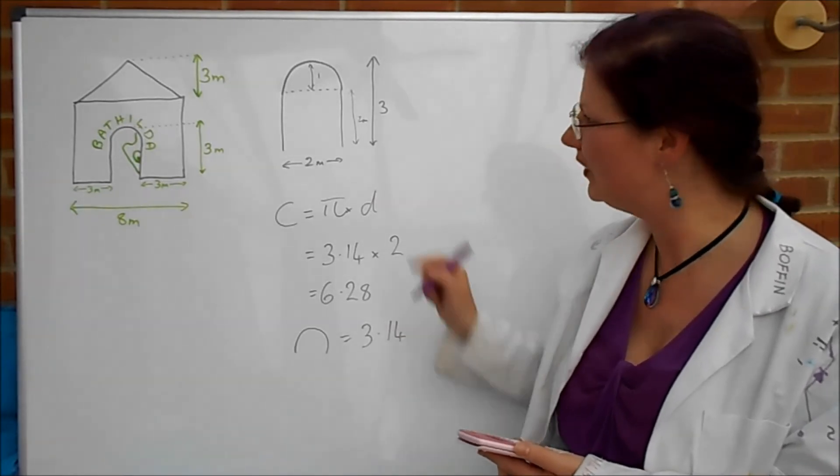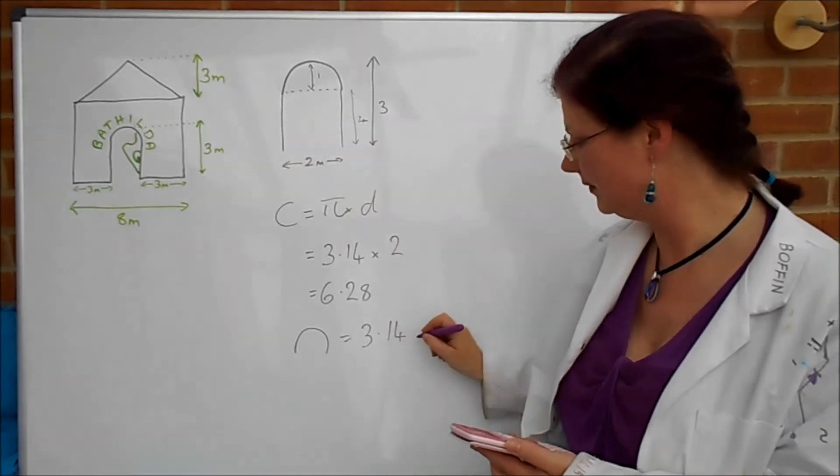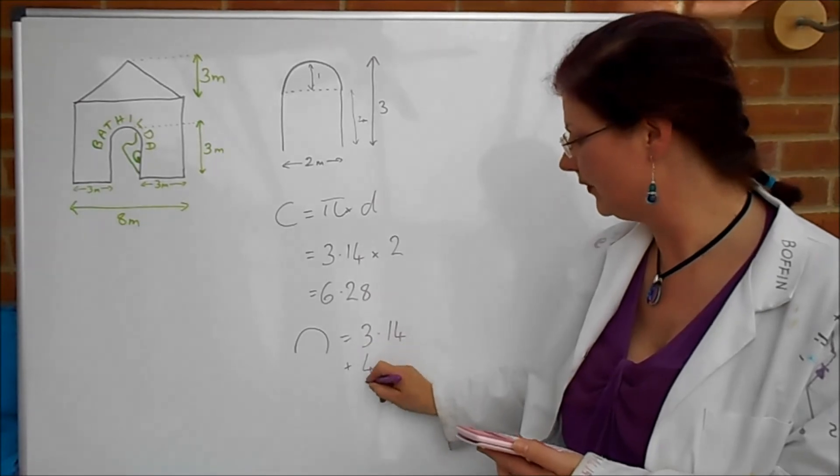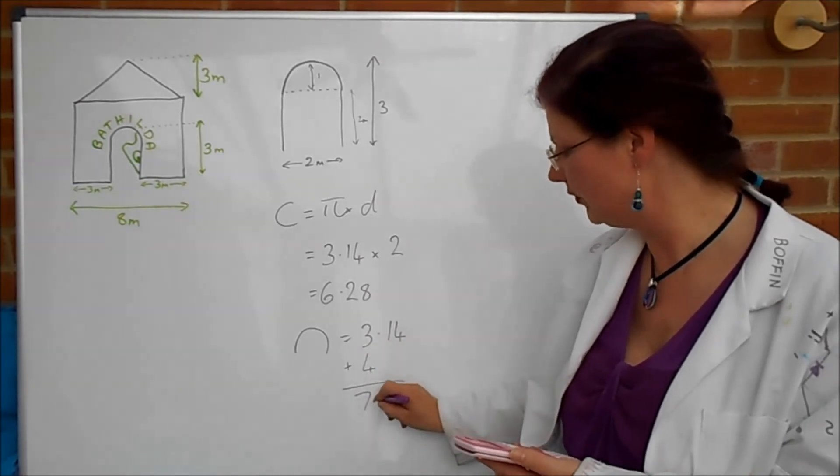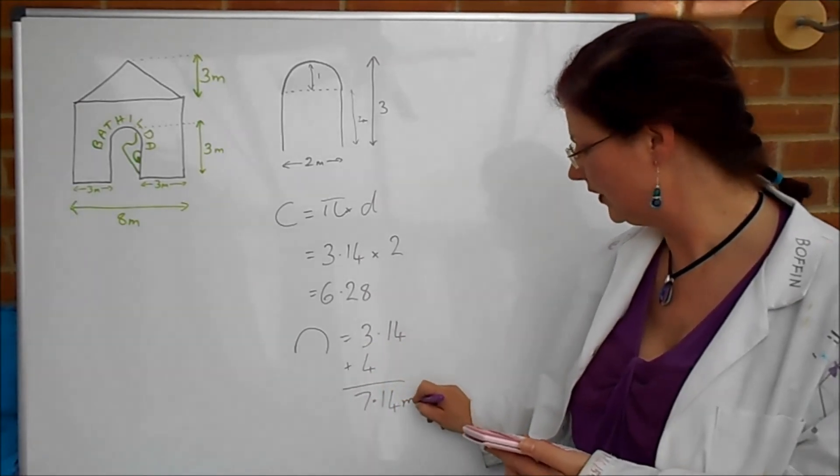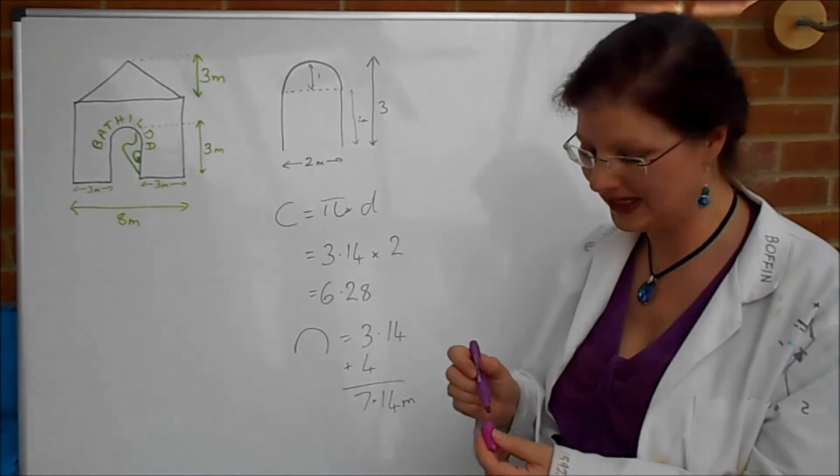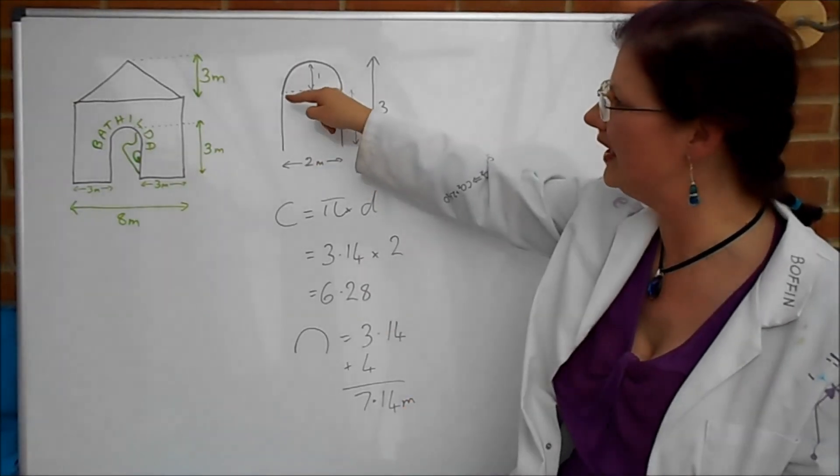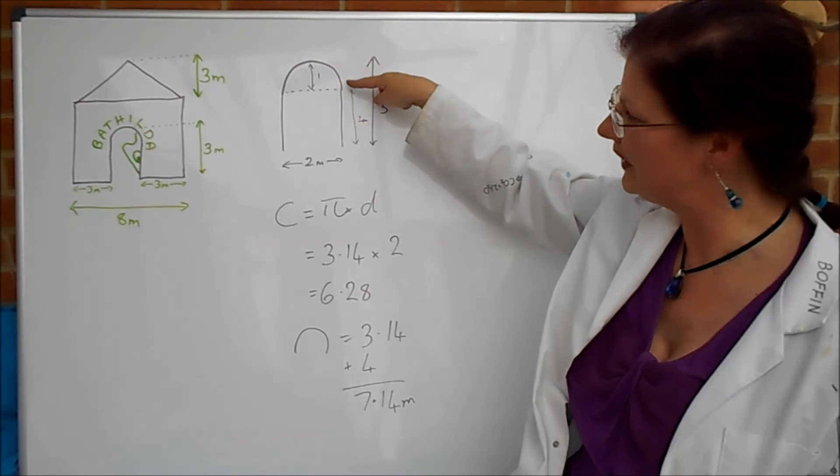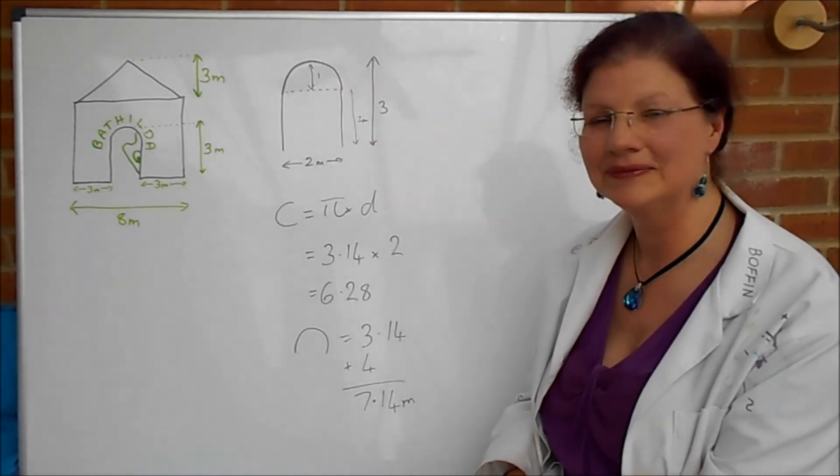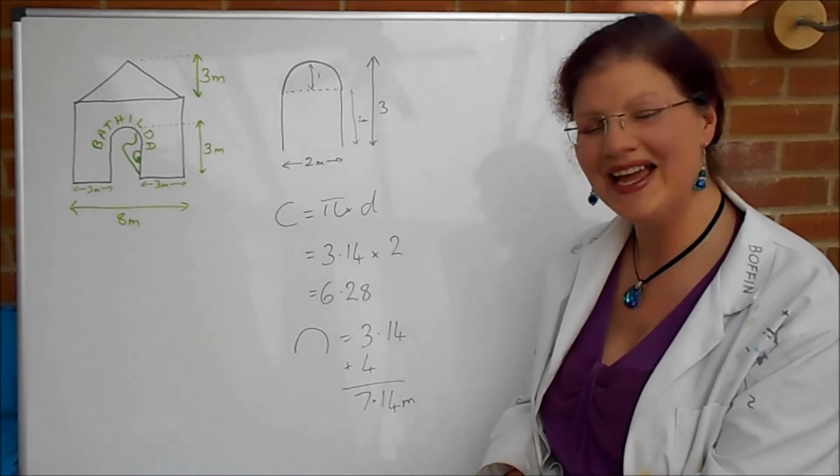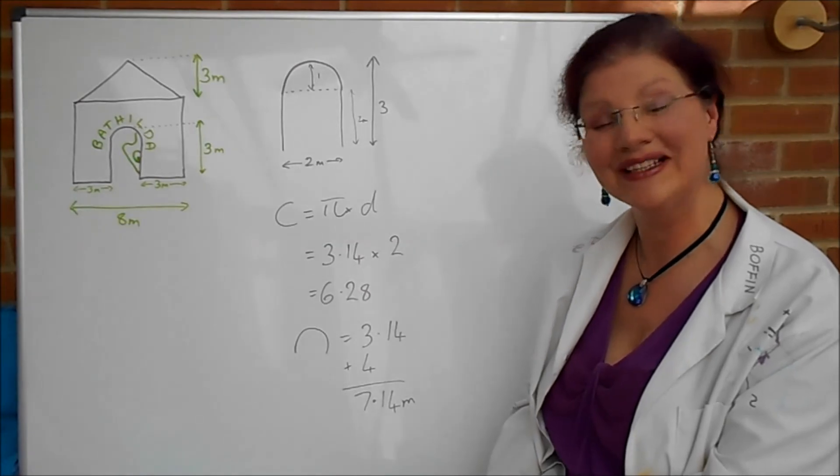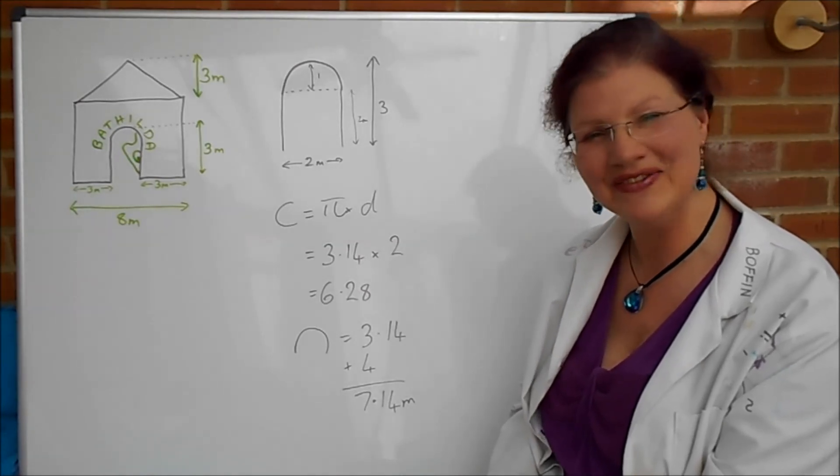3.14 plus two and two so plus four and we get a total of 7.14 meters. Hope you enjoyed that. I'll see you again on another video for a little bit more exam practice. Bye for now batty fans.